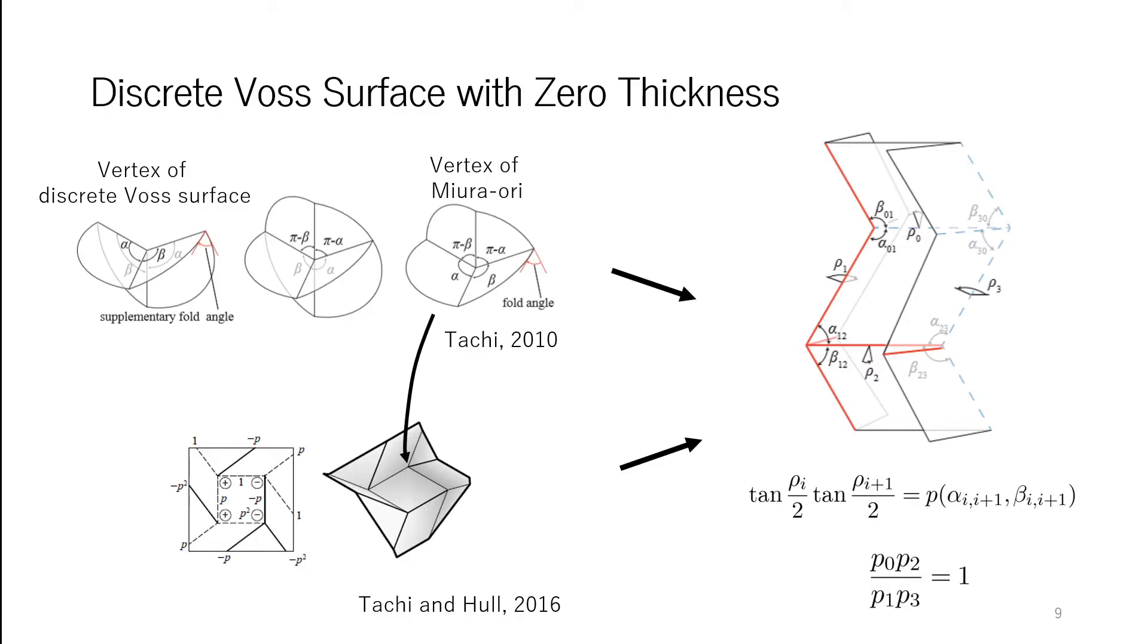In the past researches, Tachi pointed out the similarity between the Miura-ori and the discrete Voss surface. And Tachi and Hull showed the rigid folding condition for the Miura-ori. With reference to these, we derived the loop constraint as shown.